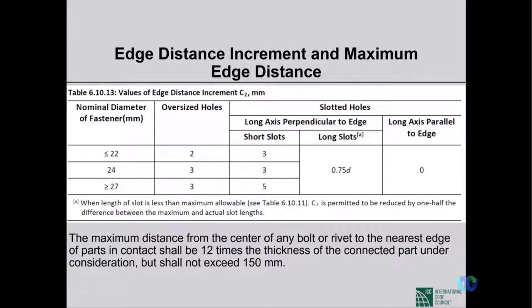The maximum distance from the center of any bolt to the nearest edge of parts in contact shall be 12 times the thickness of the connected part, but not more than 150mm. This is important when attaching bracing with a gusset plate — the distance from the gusset plate edge should follow these recommendations.